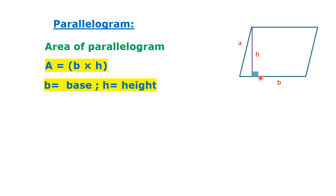Parallelogram. Area of parallelogram A equals B times H, where B is the base and H is the height. Perimeter of parallelogram P equals 2 times quantity A plus B.